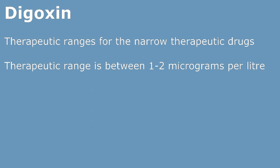Finally, knowing the therapeutic ranges for the narrow therapeutic drugs will be extremely beneficial, as sometimes these are asked in the open book exam. If you know the ranges already, it will save you a few extra precious minutes to tackle other questions in the exam. In the case of digoxin, the therapeutic range is between 1-2 micrograms per litre.